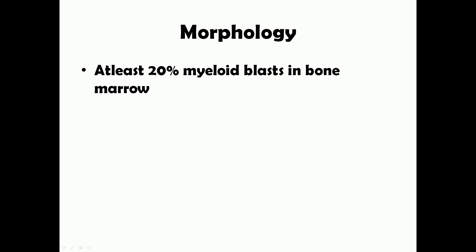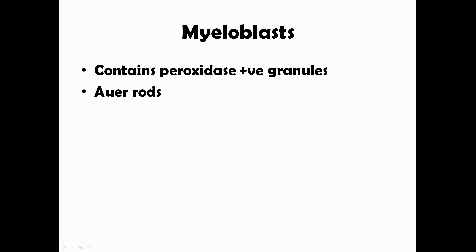The main morphological finding in AML is at least 20% myeloblasts in bone marrow biopsy. Myeloblasts are immature precursor cells with characteristic features including peroxidase-positive azurophilic granules. There are also slender rods visible in myeloblasts called Auer rods, which are pathognomonic for AML.